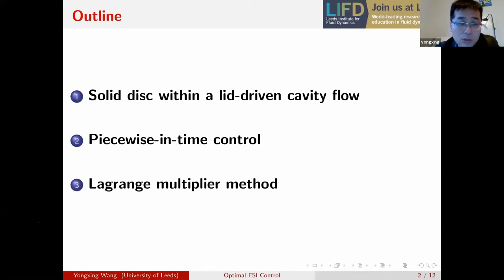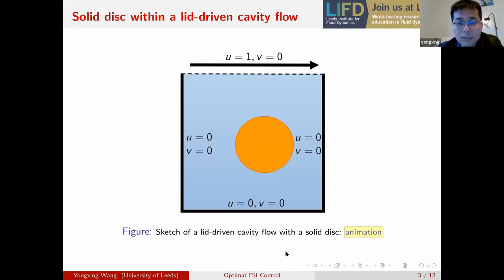So all my talk will be based on an example, and I will use this example to introduce a piecewise in time control method and the Lagrange multiplier method. So this is a lid-driven cavity flow problem, and there is a disc seat inside of the cavity, and the horizontal velocity is prescribed at the top of the cavity.